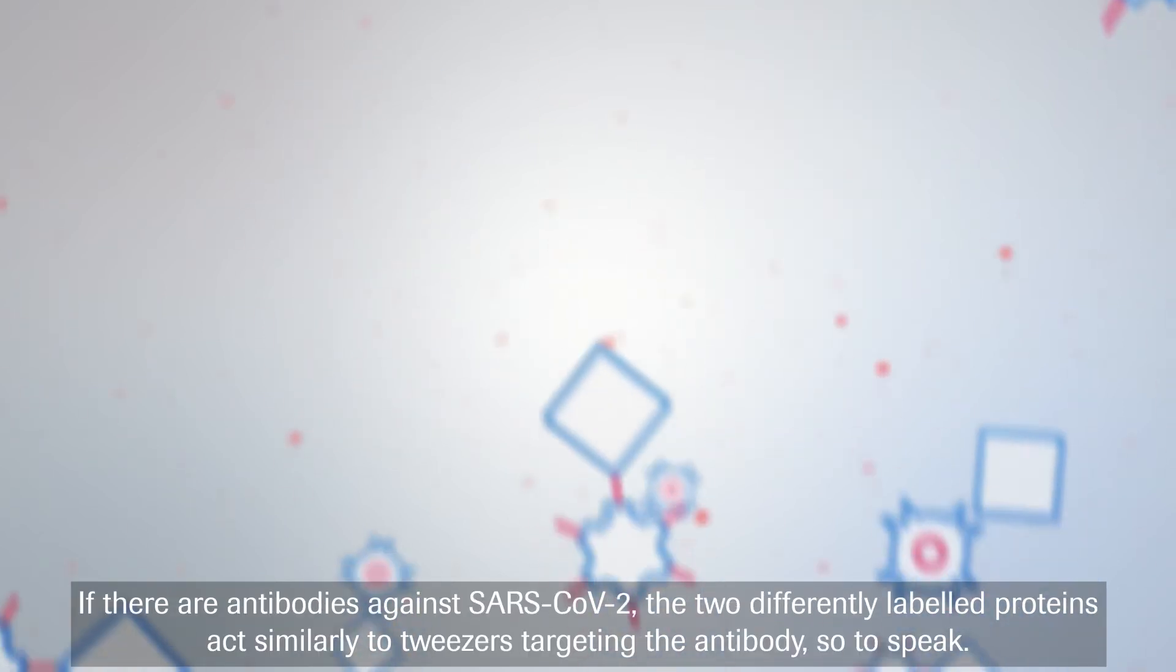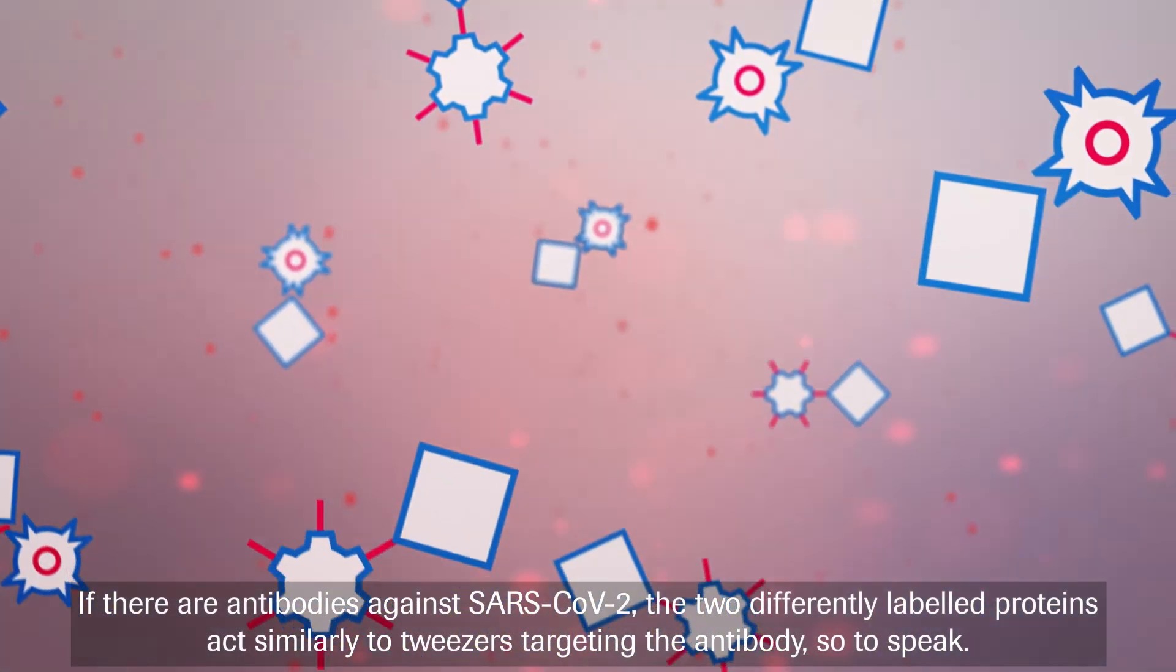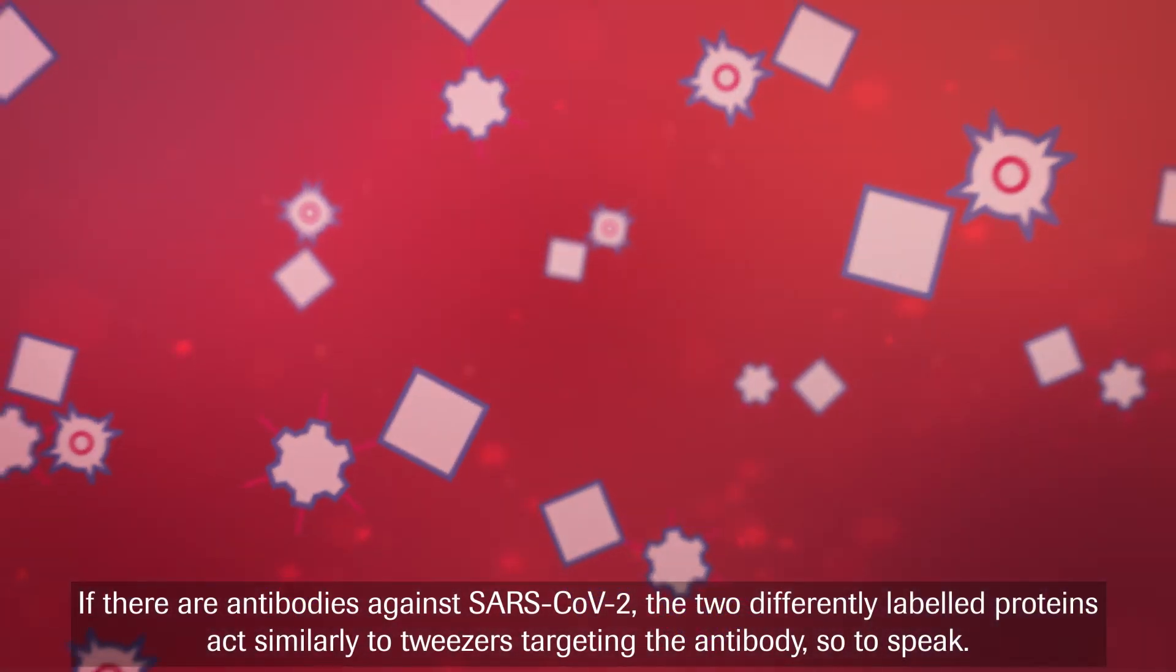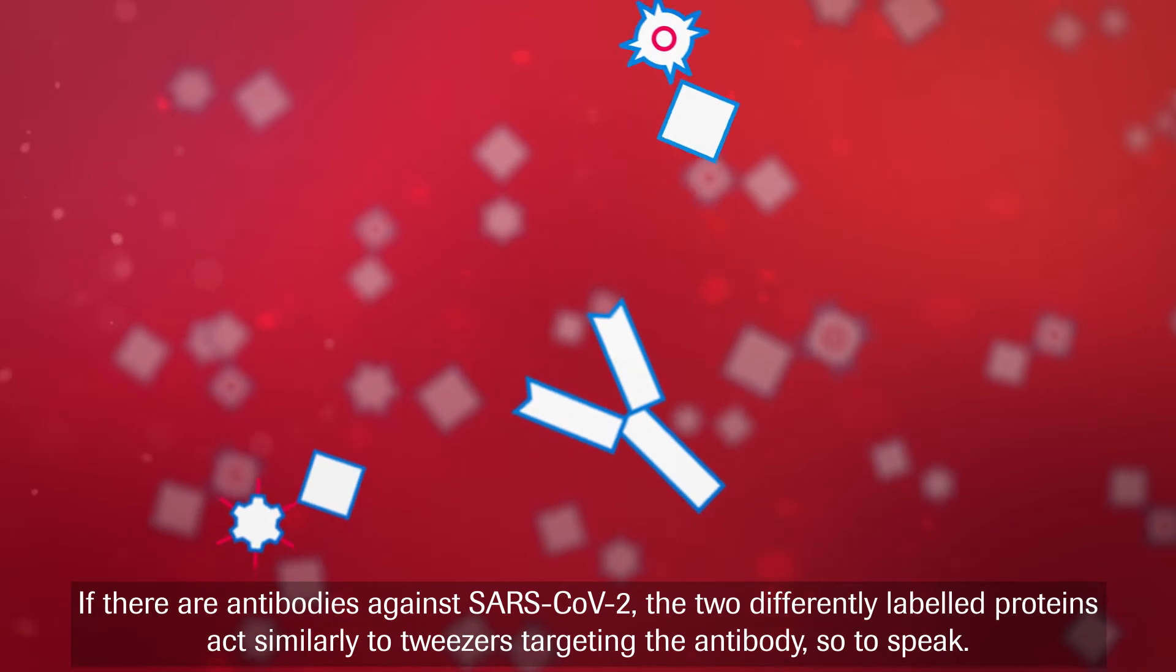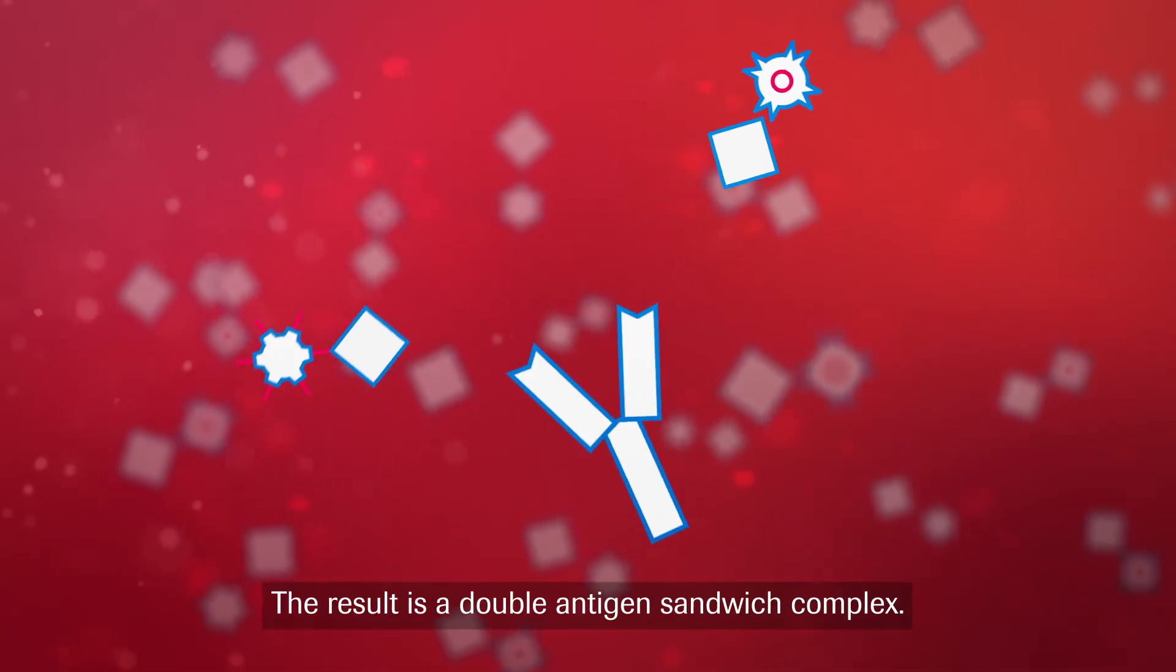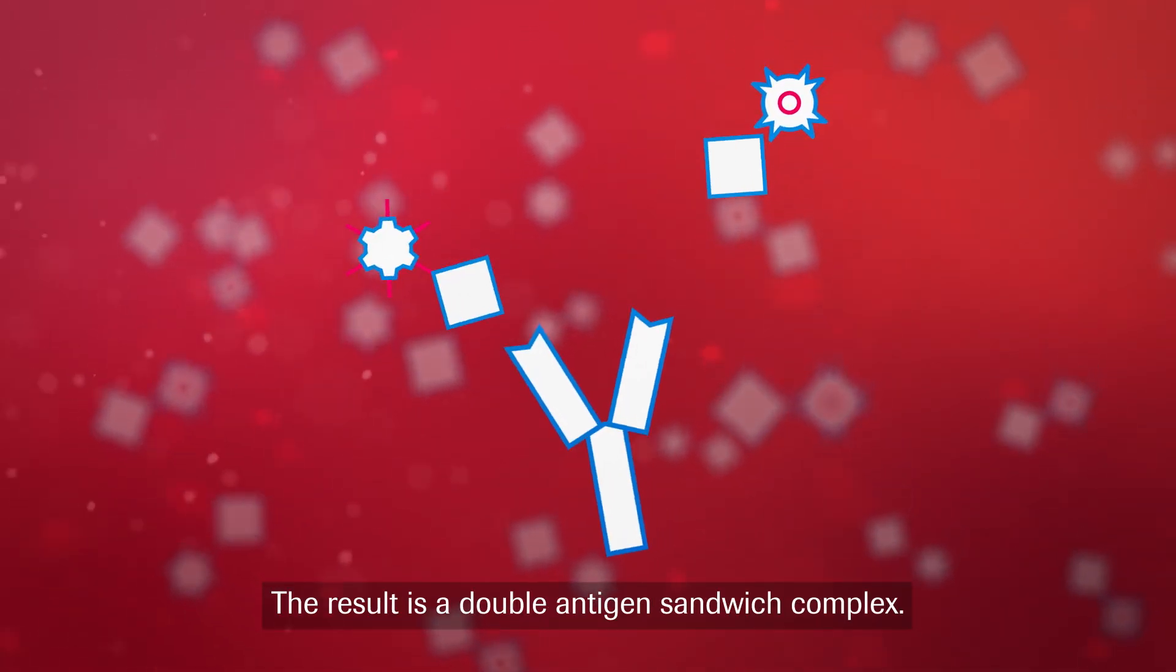If there are antibodies against SARS-CoV-2, the two differently labeled proteins act similarly to tweezers, targeting the antibody, so to speak. The result is a double antigen sandwich complex.